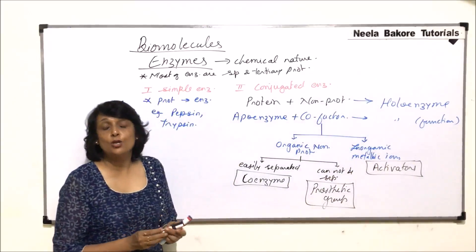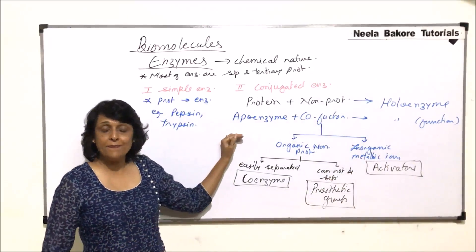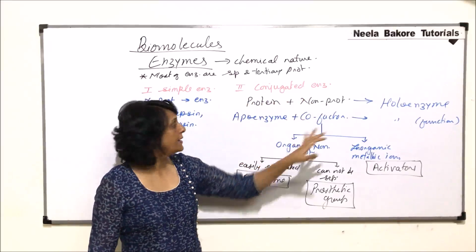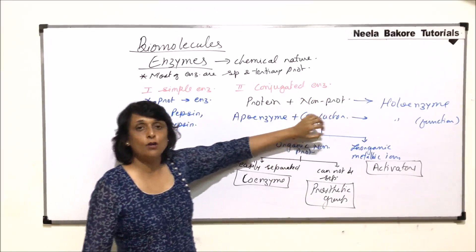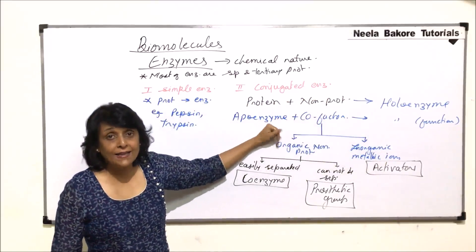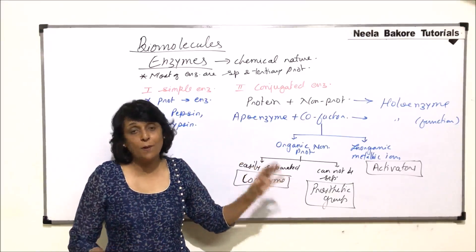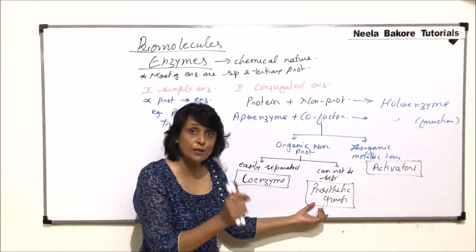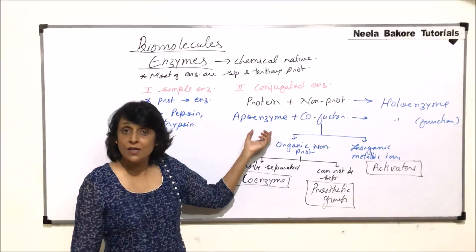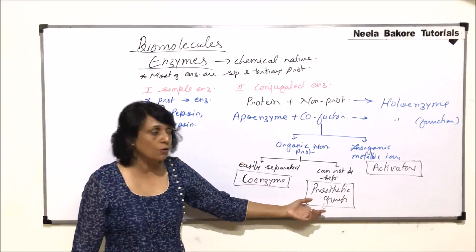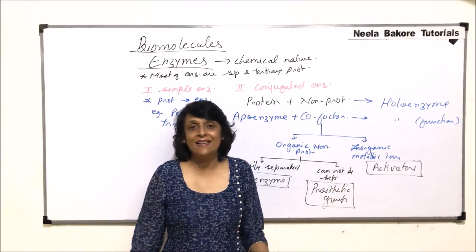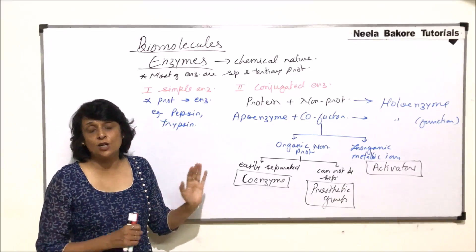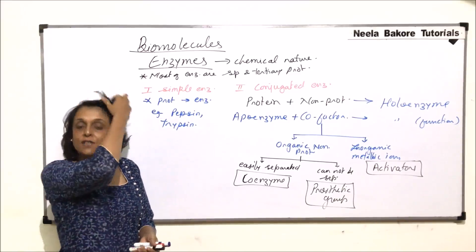If the cofactor consists of inorganic metallic ions, the term normally used is activators. So, any non-protein part attached to an apoenzyme is called a cofactor. A cofactor can be organic or inorganic. If organic, it is a coenzyme if easily separated, or a prosthetic group if permanently attached. If it is a metallic ion, it is called an activator.